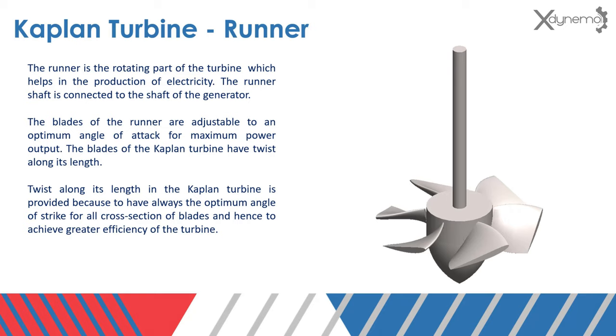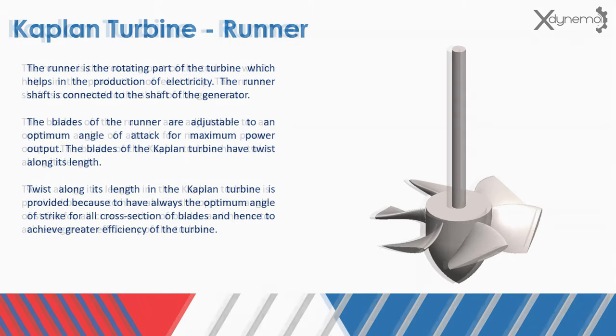Twist along its length in the Kaplan turbine is provided to have always the optimum angle of strike for all cross sections of blades, and hence to achieve greater efficiency of the turbine. To understand the reason behind the twisting of turbine blades, we have to understand the velocity diagrams and optimum angle of attack.